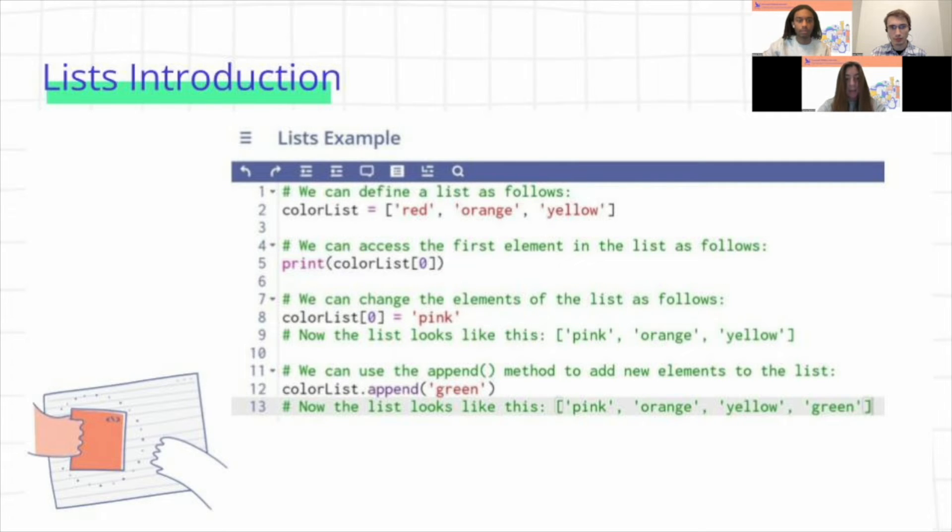And then next on line eight, we're going to change an element in the list. So what we do is we assign the element at index zero to be the color pink. So now the list is going to be pink, orange, yellow, because the red color has now been replaced by the element pink. And then finally on line 12, this is an example of how we can add another color to a list using the append method. So instead of replacing another color already in the list, we can just add a new color onto the very end. So now our list is going to look like pink, orange, yellow, and green.